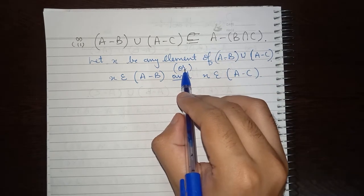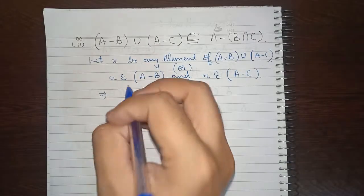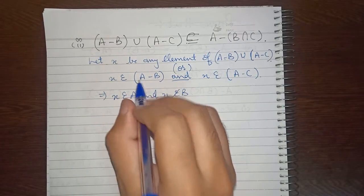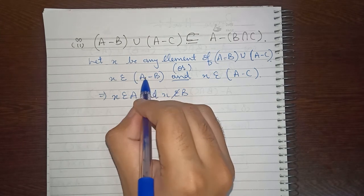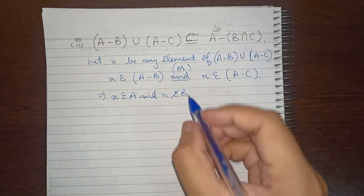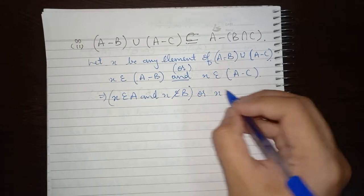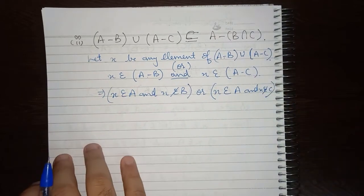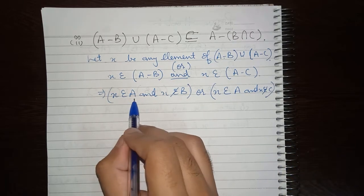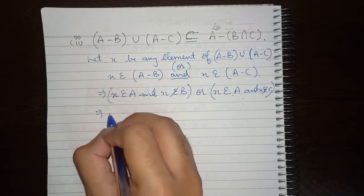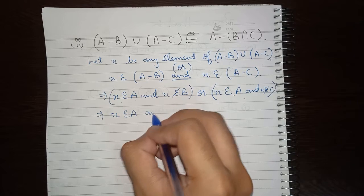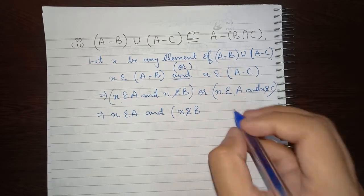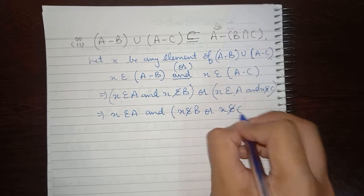On further deduction, we get: X belongs to A and X does not belong to B — because A is the first set and B comes after the difference symbol — OR X belongs to A and X does not belong to C. Now we do a little manipulation: we take 'X belongs to A' as common from both brackets, leaving us with X belongs to A AND (X does not belong to B OR X does not belong to C).